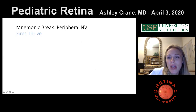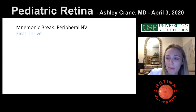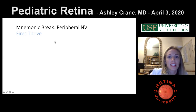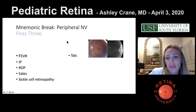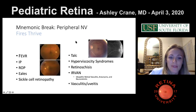There's a mnemonic for peripheral neovascularization: 'FIRST HRU V.' The causes are: FEVR, incontinentia pigmenti, ROP, eels (EALES), sickle cell, talc retinopathy, hyperviscosity syndromes, retinoschisis, URVAN, and vasculitis/uveitis. The ones on the left you know about; the ones on the right are less common causes of peripheral NV.